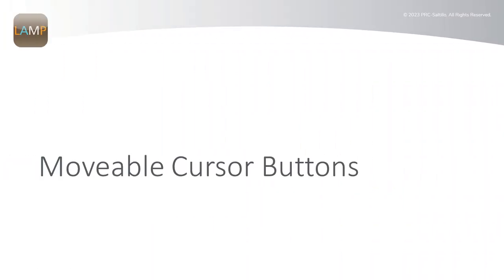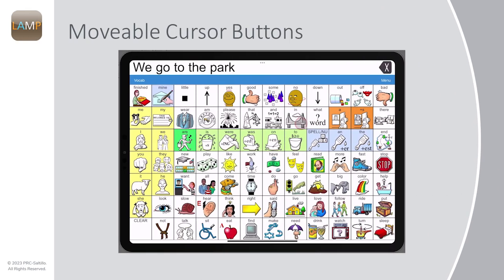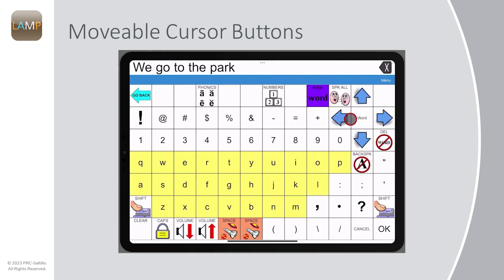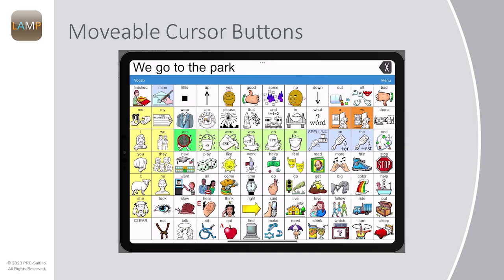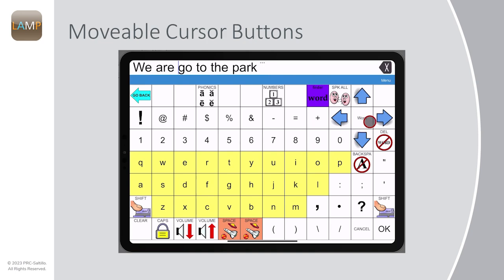Moveable cursor buttons are now pre-programmed into Lamp Words for Life. AAC communicators can edit the message in their speech display bar by going to the spelling page, toggle between moving by characters, words, or sentences, and then arrowing over to the position and placing the correct words. You can also make corrections straight from the keyboard.